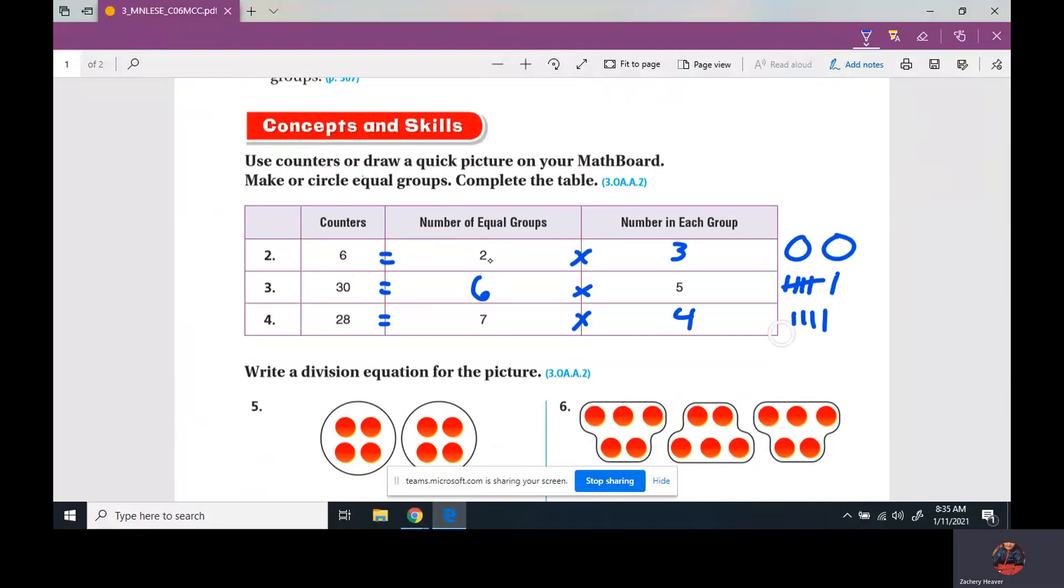You can even do the same thing here. What times seven equals 28? Seven, fourteen, twenty-one, twenty-eight - four. And you could do the groups too. We don't have enough room on here to do the groups, but the groups will look like this. For example, we have two equal groups. Good. One, two, three, four, five, six. You can see there's three in each group.